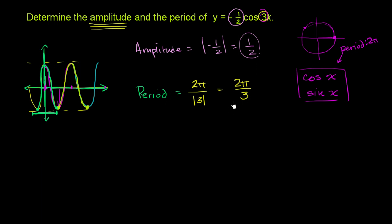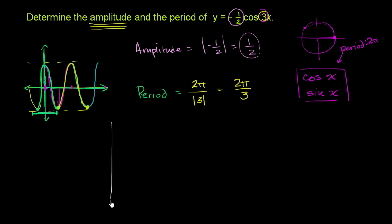You might say, well, why are you taking the absolute value here? If this was a negative number, it would get you to negative 2π all that much faster, but either way you're going to be completing one cycle. So with that out of the way, let's visualize these two things — let's actually draw negative 1 half cosine of 3x.